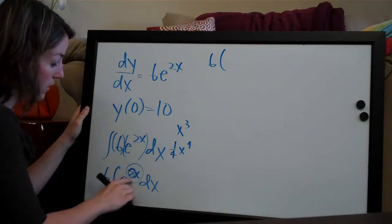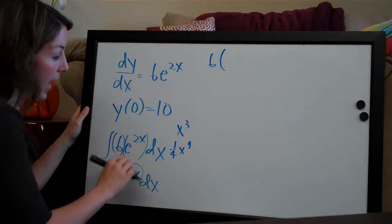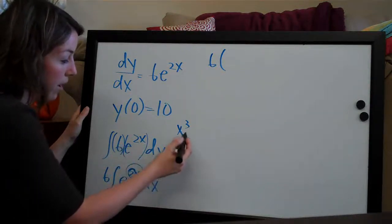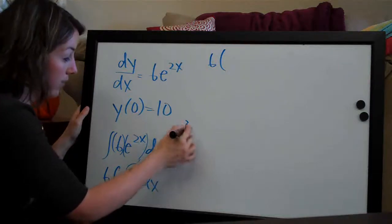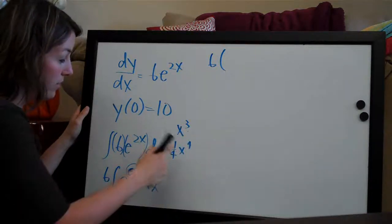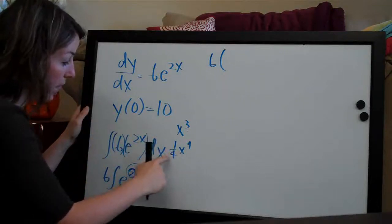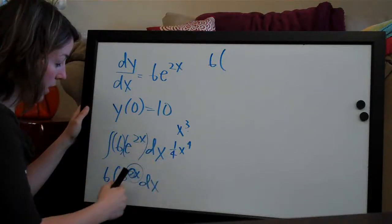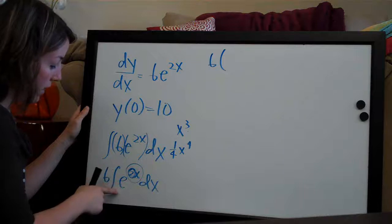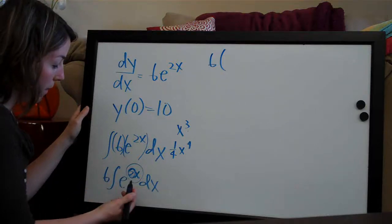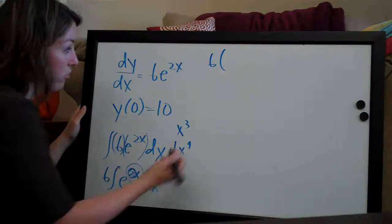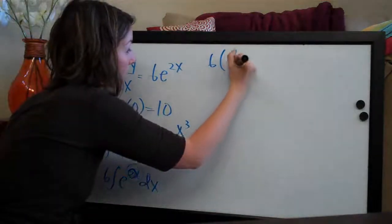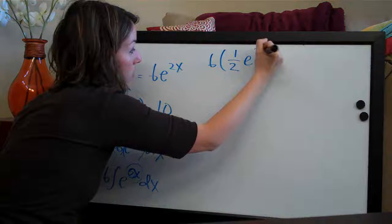This constant, 2, is going to act in the same way that this exponent does when we're taking an integral of a simple term. In the same way that we have 1/4 out in front here, we're going to divide this term by the coefficient on the x. So this is going to look like (1/2)e^(2x).